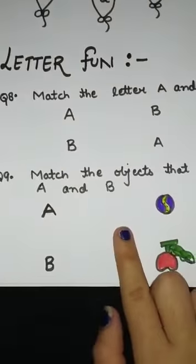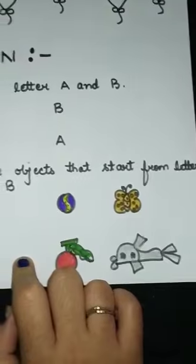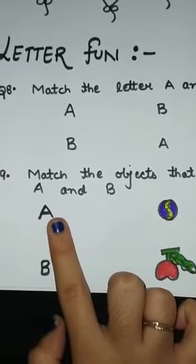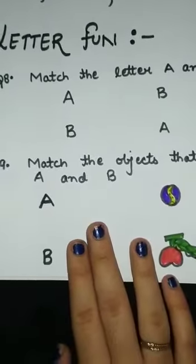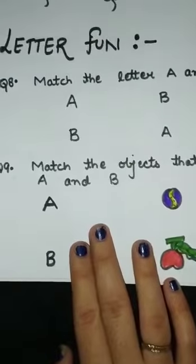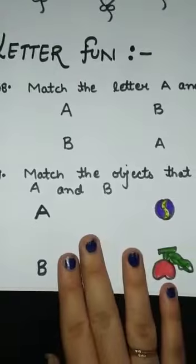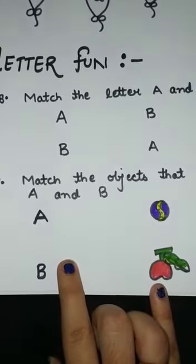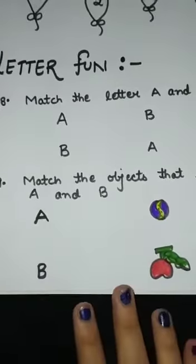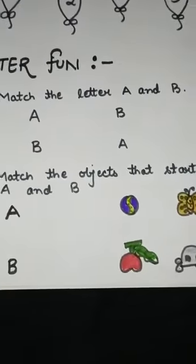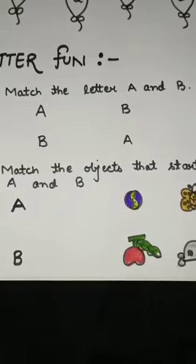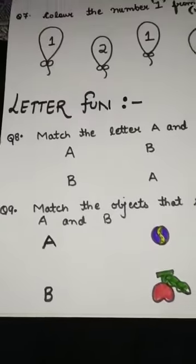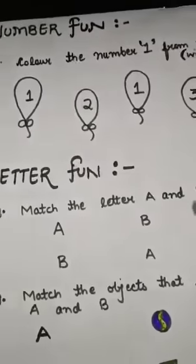The last question is: match the object that starts with letter A and letter B. You have to match the object that starts with letter A — meaning A is for which object — and match the object that starts with letter B. This is your test so I have not told you the answers. I hope you understood the full test.